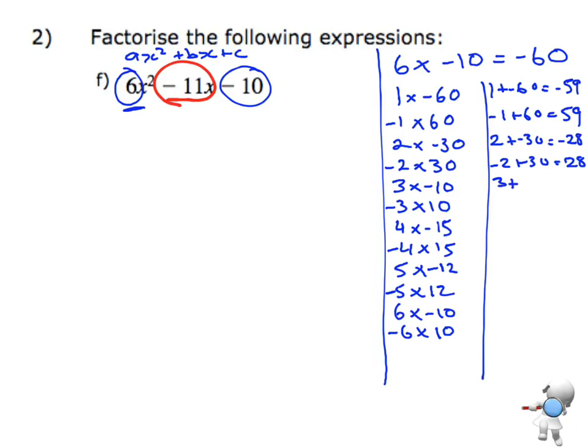3 plus negative 10 will give me negative 7. Negative 3 plus 10 is positive 7. 4 plus negative 15 equals negative 11. And that's the one that I'm looking for.